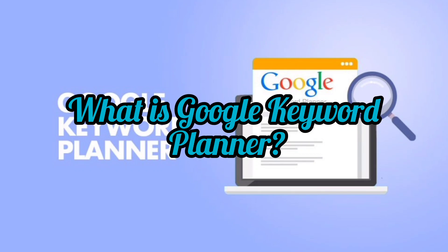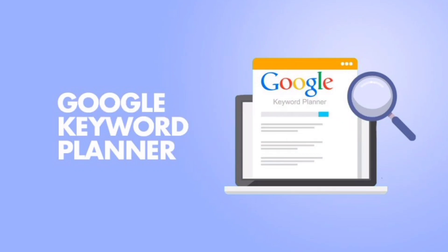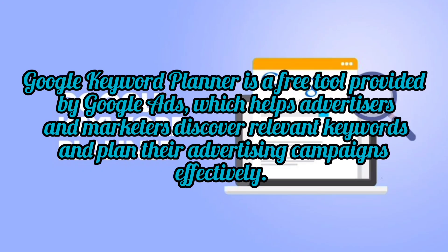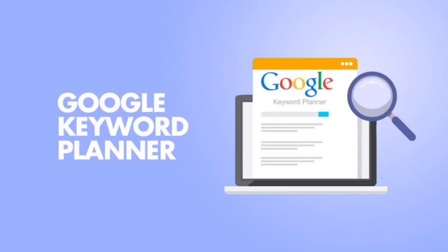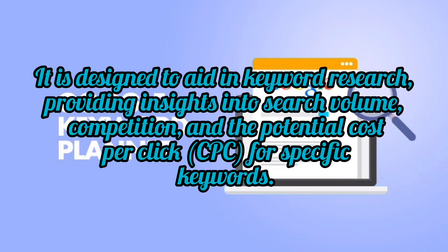What is Google Keyword Planner? Google Keyword Planner is a free tool provided by Google Ads which helps advertisers and marketers discover relevant keywords and plan their advertising campaigns effectively. It is designed to aid in keyword research, providing insights into search volume, competition, and the potential cost per click for specific keywords.